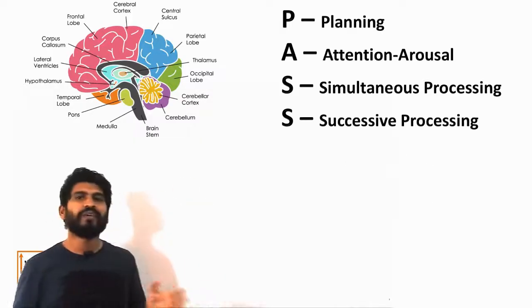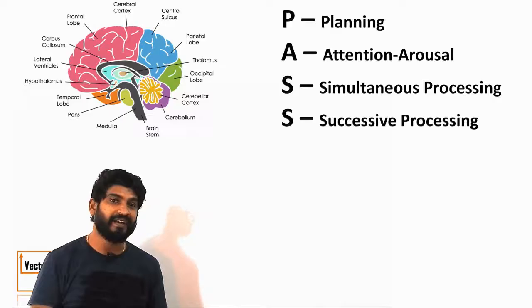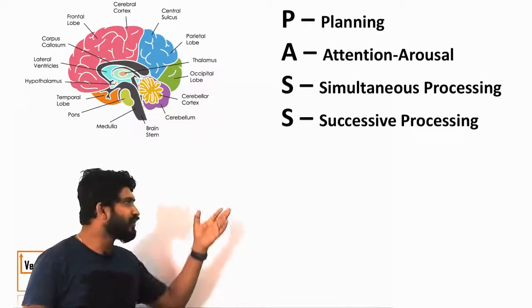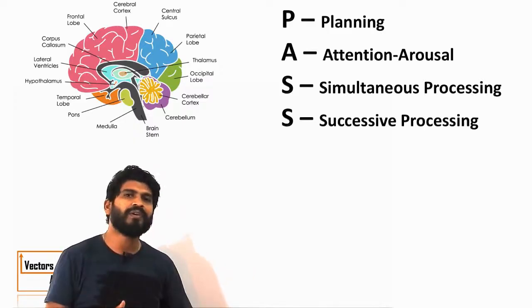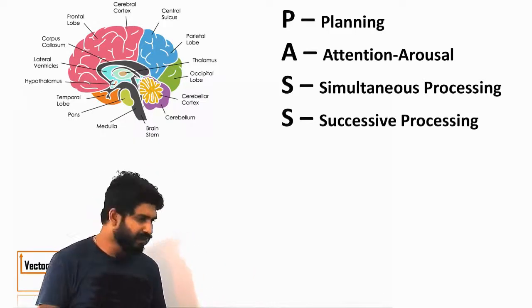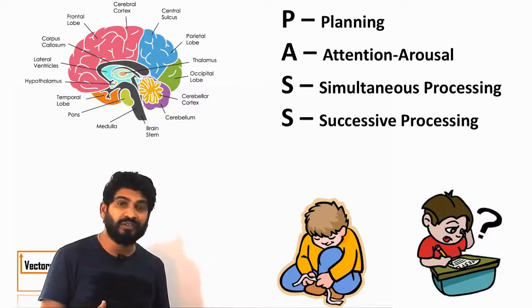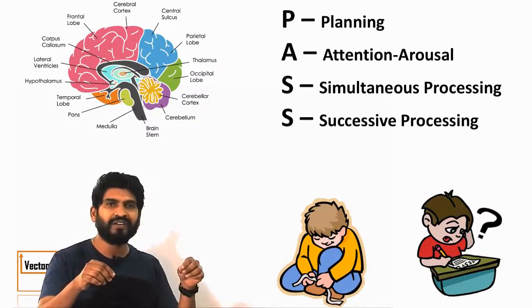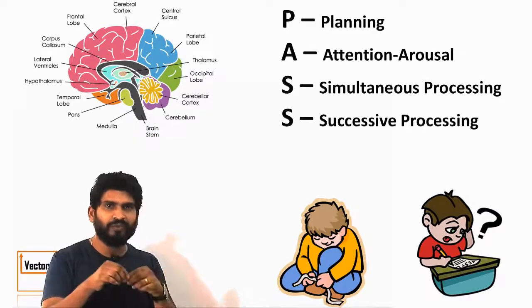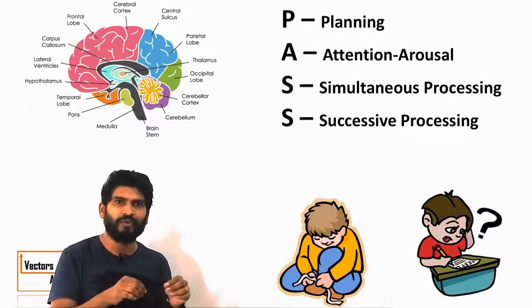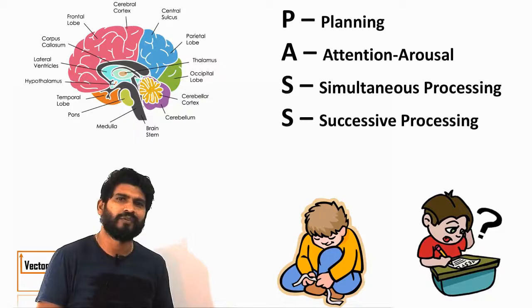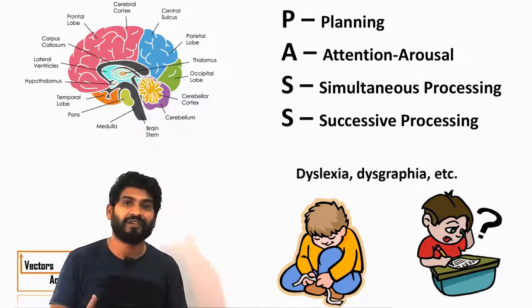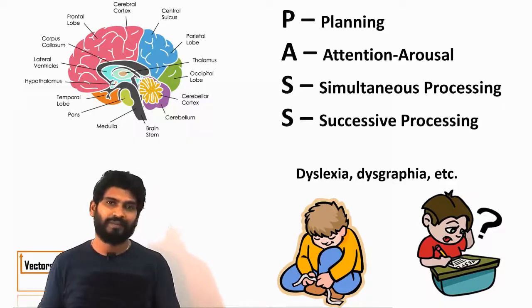So these are the four abilities in which the intelligence can be divided according to this theory. Now, again the person who is weak in the last two abilities, that is simultaneous and successive abilities, they are not able to perform daily tasks properly. For example, tying a shoelace. So the students are not able to understand two different type of stimulus together and which one should go first. Not able to prioritize what is the perfect order to tie the lace. Few of them find such type of basic operations very difficult to perform. Such type of disorders can be dyslexia or something. So this is all about the pass theory.